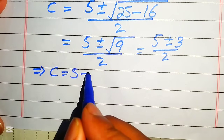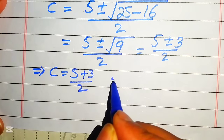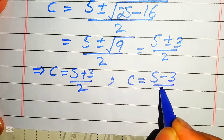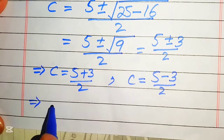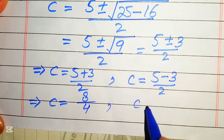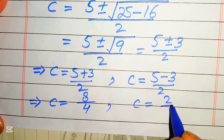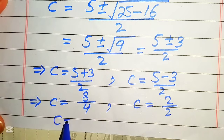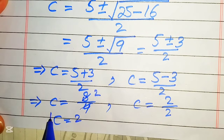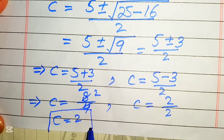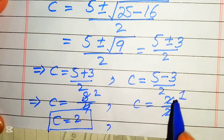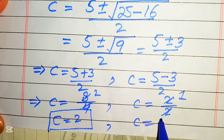The first case is 5 plus 3 over 2, and the second case is c equals 5 minus 3 over 2. From the first case we get 8 over 2, so c equals 4. From the second case we get 2 over 2, so c equals 1. These are our two candidate values of c.